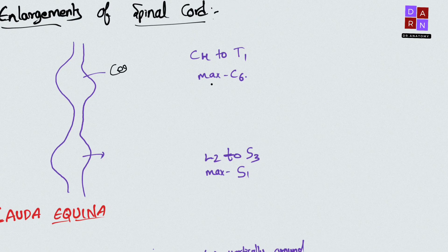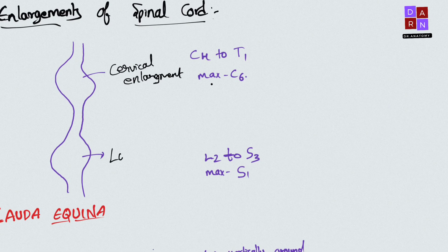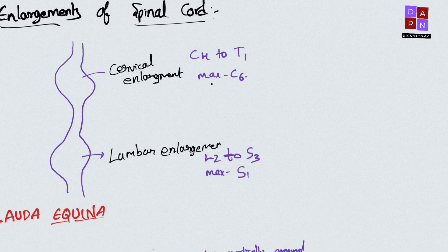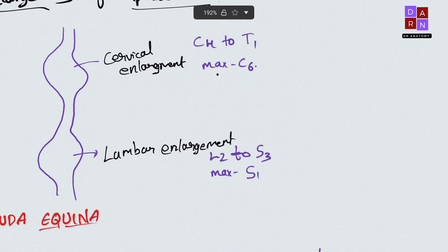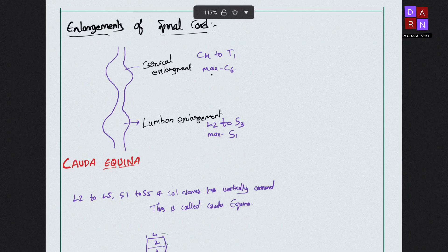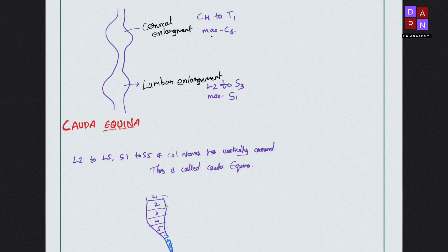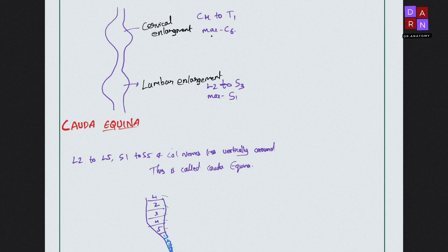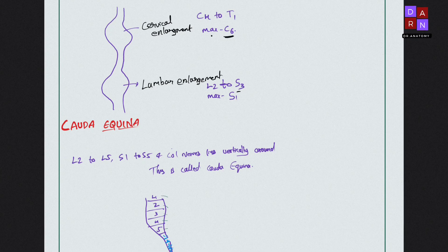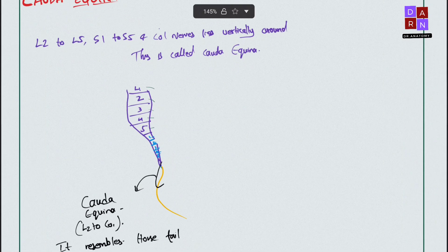The spinal cord has two enlargements: cervical enlargement and lumbar enlargement. These enlargements exist because they supply more nerves to the skeletal muscles — the cervical enlargement supplies the upper limbs, and the lumbar enlargement supplies the lower limbs. The cervical enlargement spans C4 to T1, with maximum enlargement at C6. The lumbar enlargement spans L2 to S3, with maximum enlargement at S1.